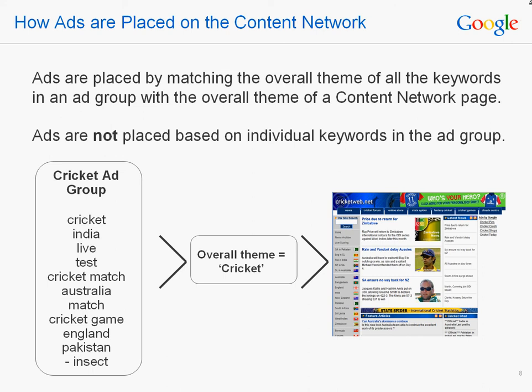Let's take a quick look at an example of how this might work. In the cricket ad group, not every keyword is about cricket. However, the overall theme of all the keywords in the ad group is clearly cricket. Our system intelligently determines that the overall theme of the ad group is the sport of cricket and goes looking through our database of partner sites to find web pages with a cricket theme, then places the ads on those sites.